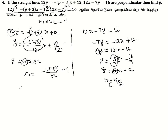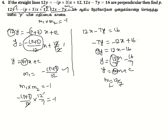Since the two lines are perpendicular, m1 × m2 = -1. So m1 × m2 = (-p + 3)/12 × 12/7 = -1. Simplifying: (-p + 3)/7 = -1.